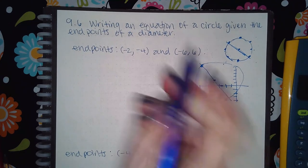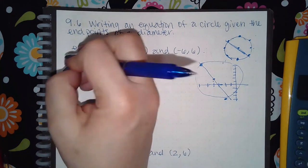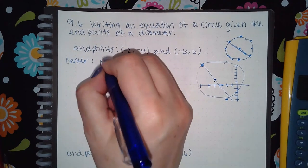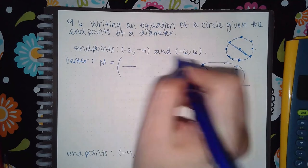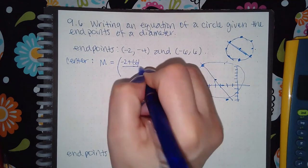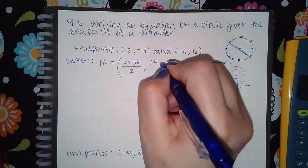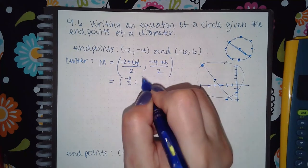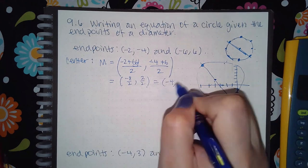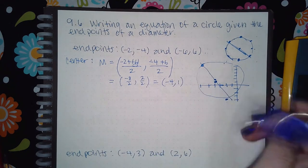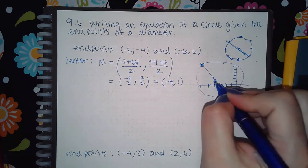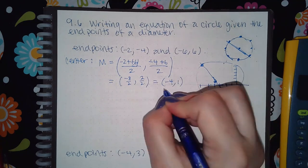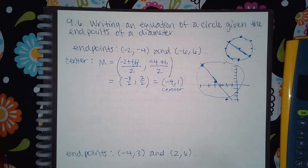We know how to find the middle between them — that's the midpoint formula. So the center is going to be found by using the midpoint formula: add the two x-values together and divide by two, add the two y-values together and divide by two. In this case I get negative eight over two and two over two, which is negative four and one — about right there on my graph. That's going to be our center.